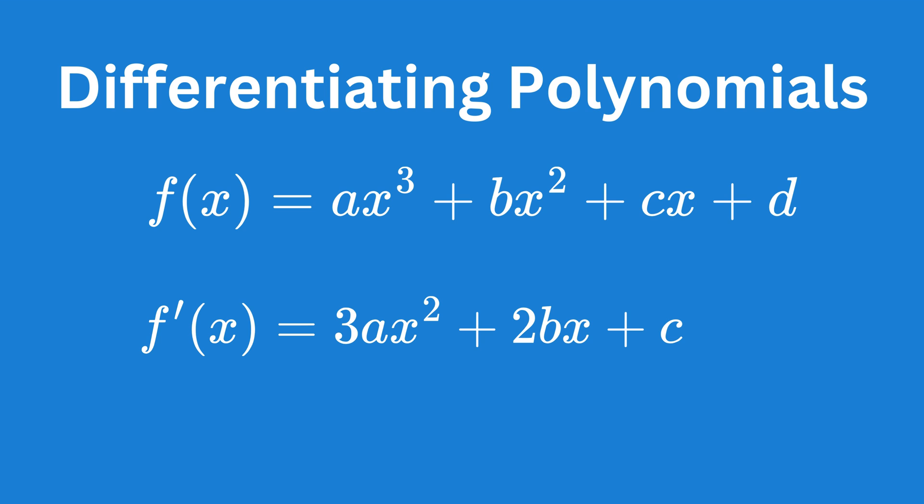Differentiation helps us find the slope of the function at any given point. For a cubic function, the first derivative is shown on screen. You simply multiply each term by the power of x, then lower the power by one. For example, on the x cubed term, you multiply the whole term by three since the power is three, and then reduce the power to two.